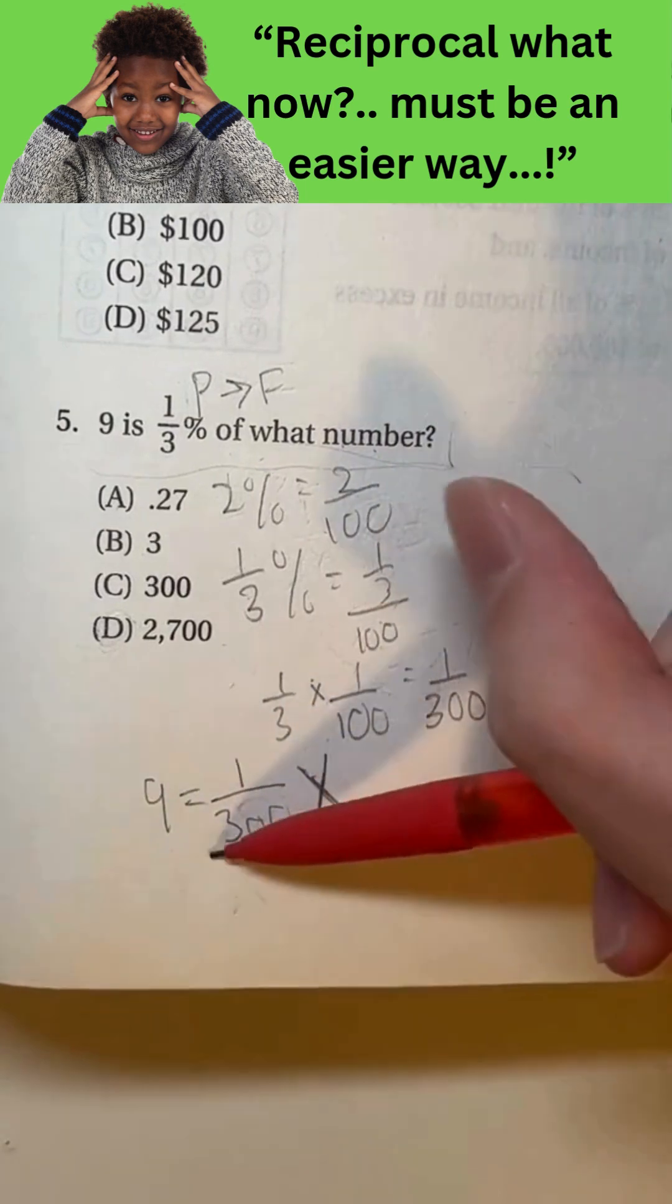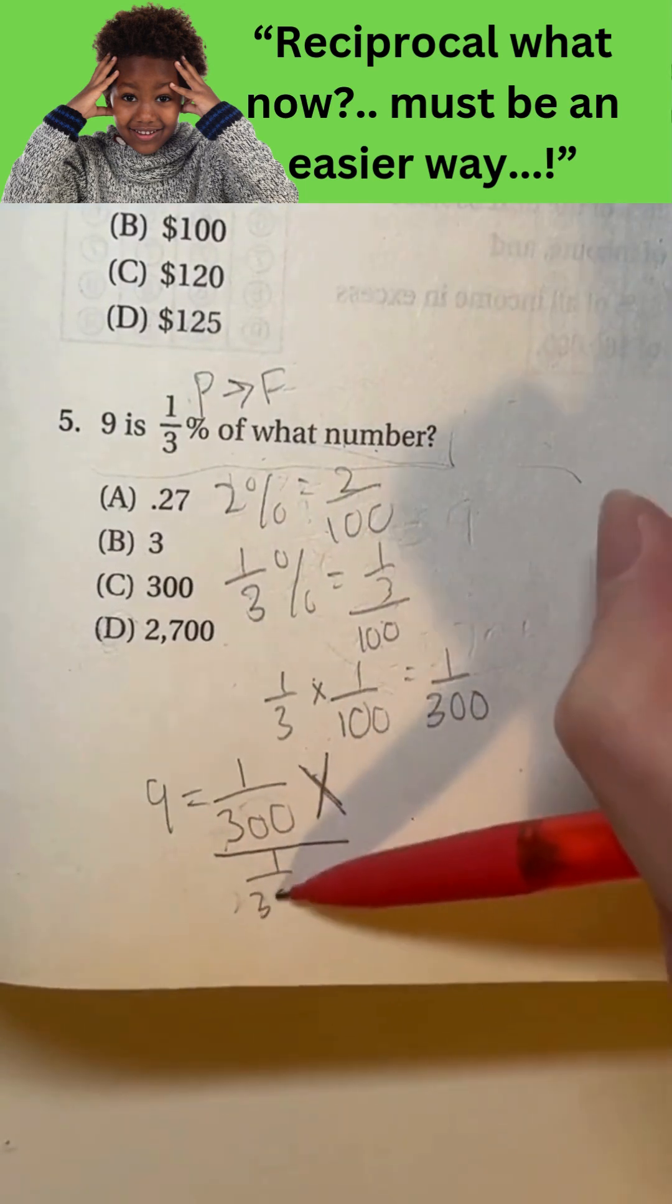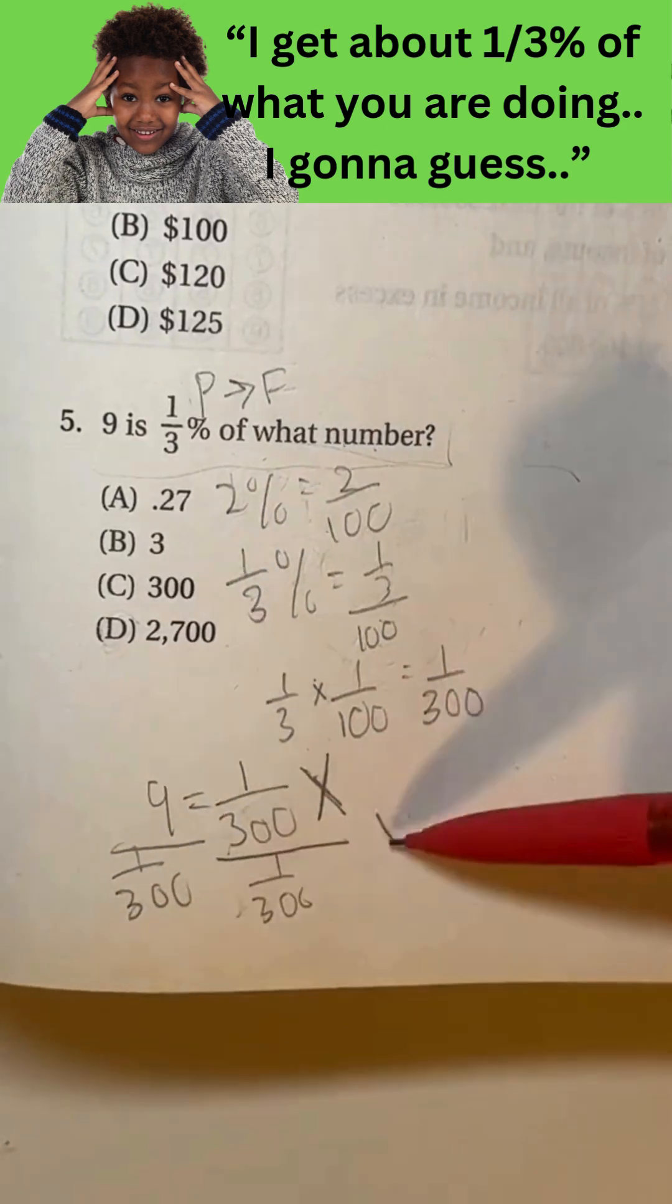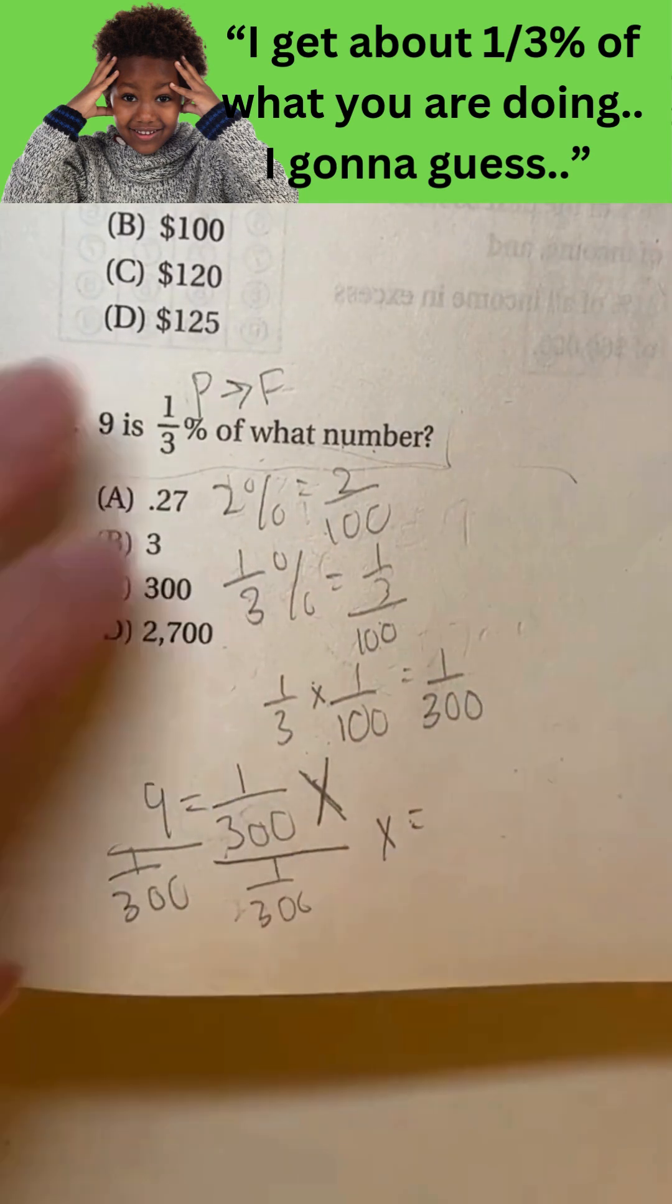To solve for X, we would have to divide both sides by 1 over 300. So X is equal to, again, we use the keep change flip rule.